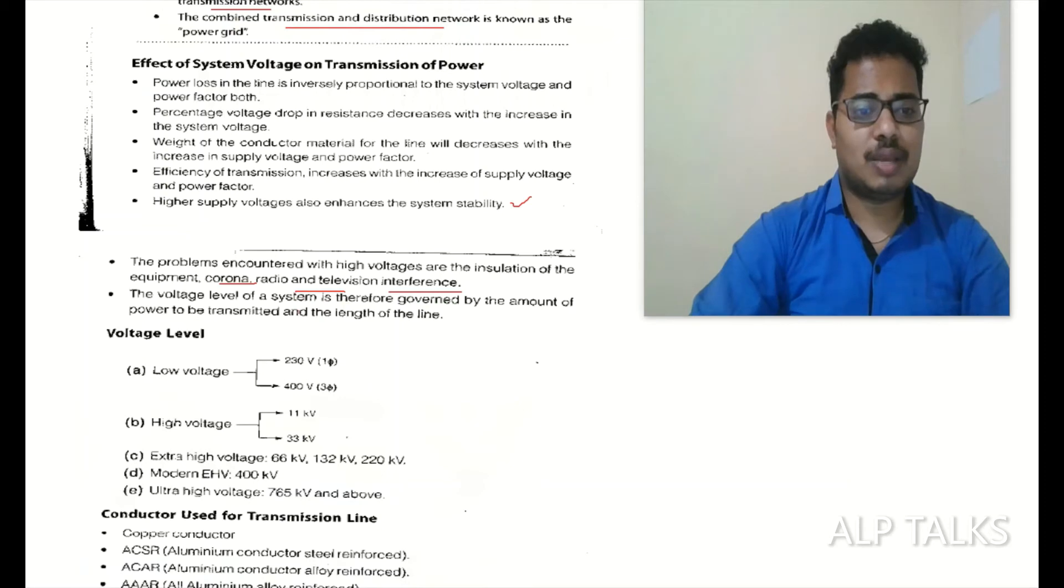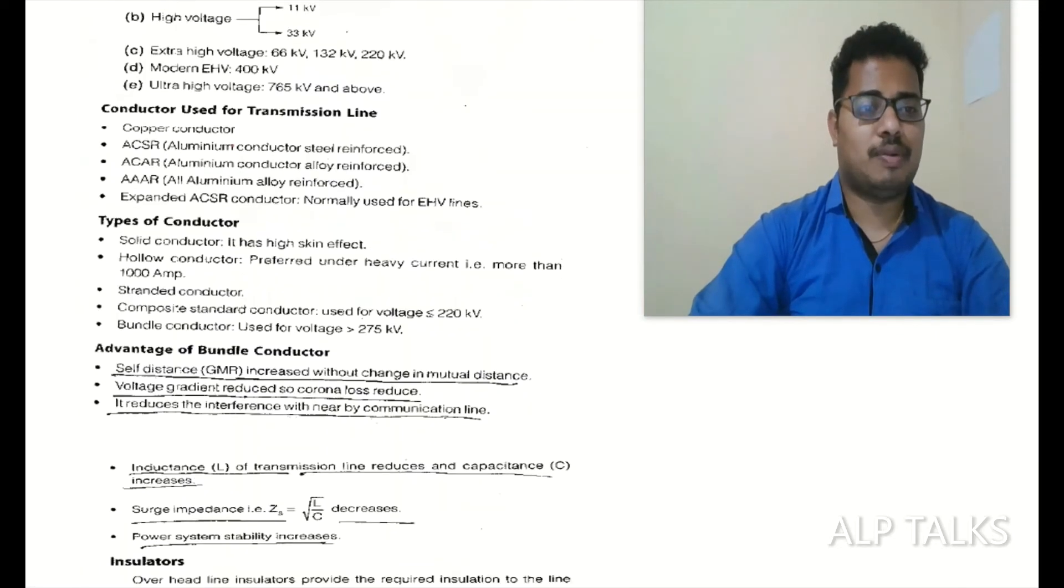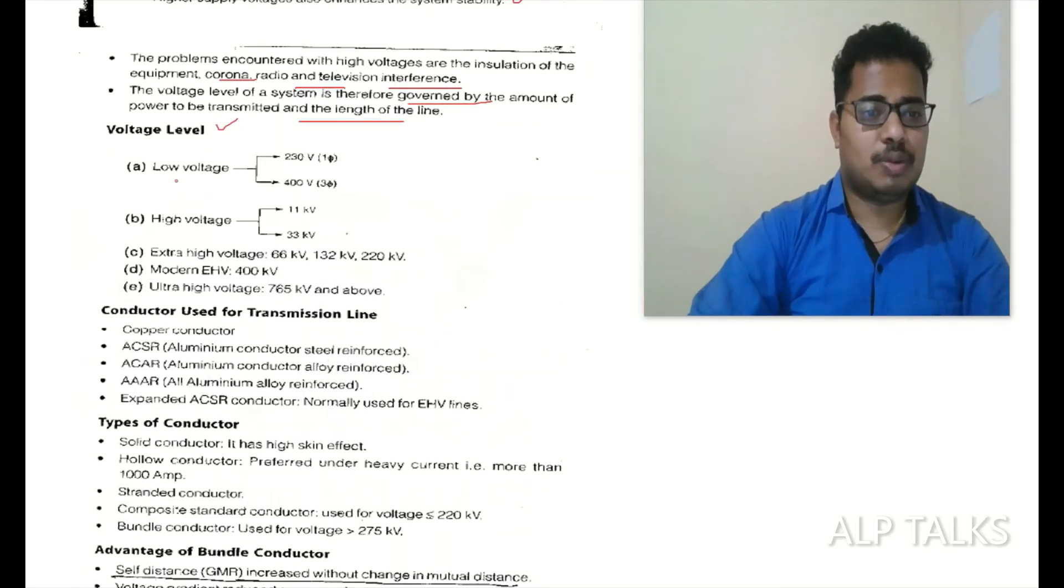The voltage level of system is therefore governed by the amount of power to be transmitted and length of the line. So length of the line plays a major role in deciding what should be the voltage for that particular application. Voltage levels: low voltage level, high voltage level, extra high voltage level, modern EHV, ultra high EHV.